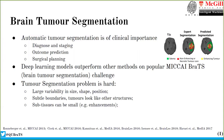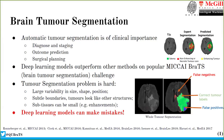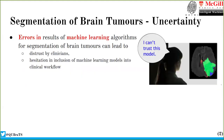For example, the boundary between necrotic core and enhancing tumor is really difficult to identify. Due to these reasons, deep learning models make mistakes. We can see that for whole tumor segmentation there are false positive and false negative voxels. This type of error in machine learning algorithms leads to mistrust by clinicians and in turn increases the resistance of clinicians to including these models in a clinical workflow.